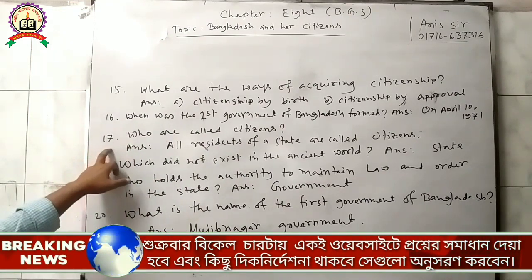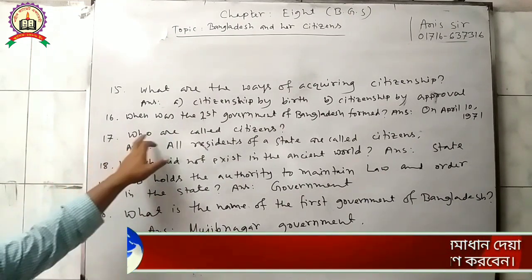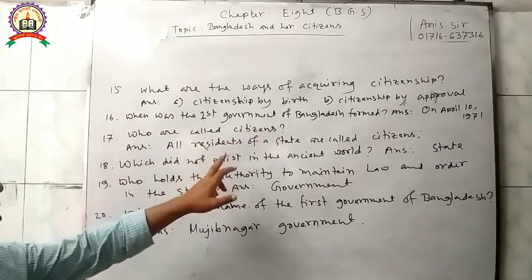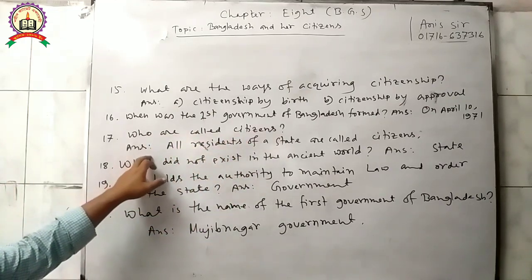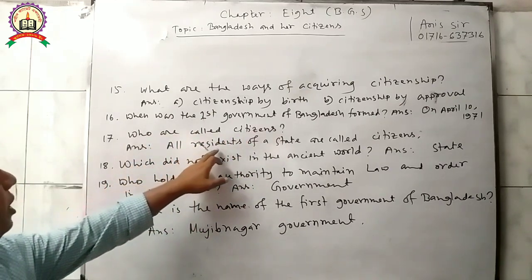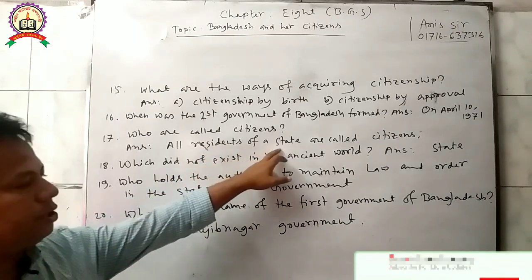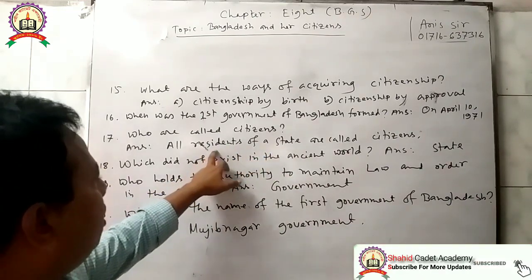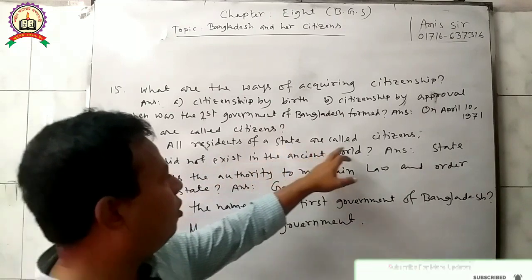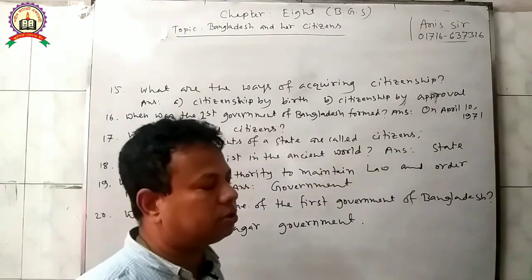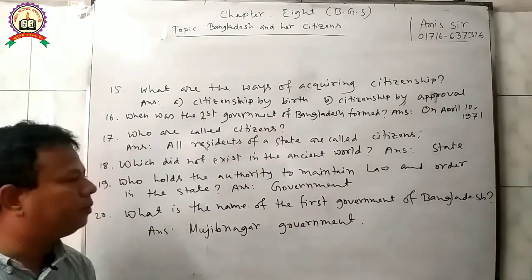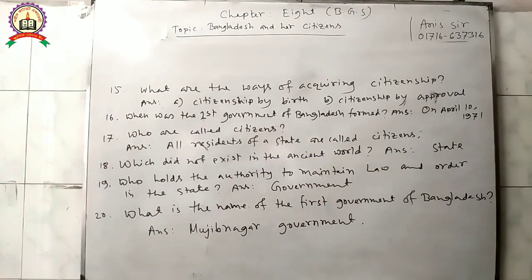Question 17: Who are called citizens? Answer: All residents of a state — that means all people of a state — are called citizens.